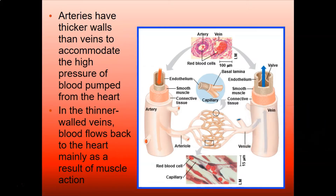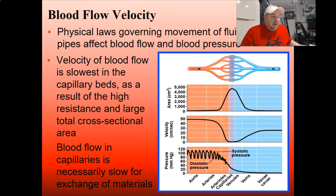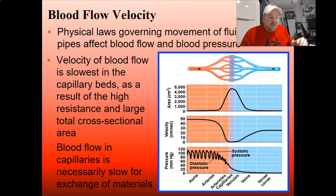One of the reasons your muscles have to be toned and working is to help push that blood along through your veins back to your heart. Physical laws governing movement of fluids through pipes affect blood flow and blood pressure. Imagine a firefighter trying to put out a fire with a fire hose but using a garden hose instead with that same amount of pressure — it couldn't possibly hold that. So it does matter: the size of the blood vessel and how fast or how much pressure the solution is moving through it.